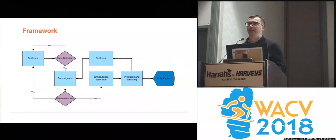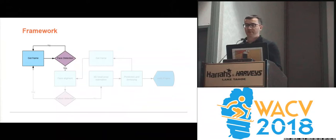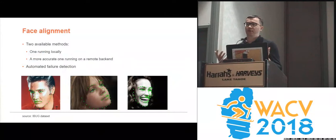Now let's take a look at the framework. It all begins when the initial frame is grabbed. The first real step is face detection, where the method attempts to find the largest face visible in the frame. If a face is found, the next step is face alignment. In this step, the framework attempts to localize a predefined set of facial landmarks within the image of the face.